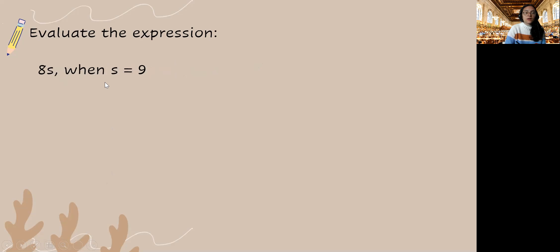Moving on we have this expression 8 times s when s is equal to 9. So what we're going to do is substitute 9 wherever we see s. And remember to use your parentheses or you can write it like this. Either way is fine. 8 times 9 is 72. Just a different way that you can write multiplication, either one is correct.